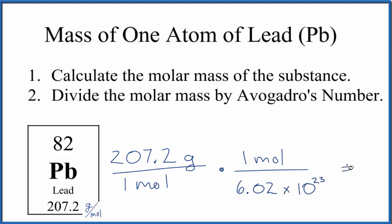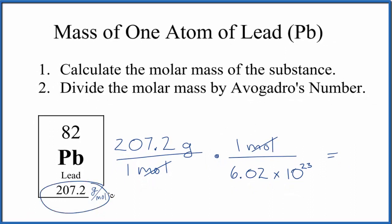When we do the math, we have moles on the top and bottom—they'll cancel out and leave us with grams. Really, all we're doing is taking this average atomic mass and dividing it by Avogadro's number to get the mass of one atom of lead.